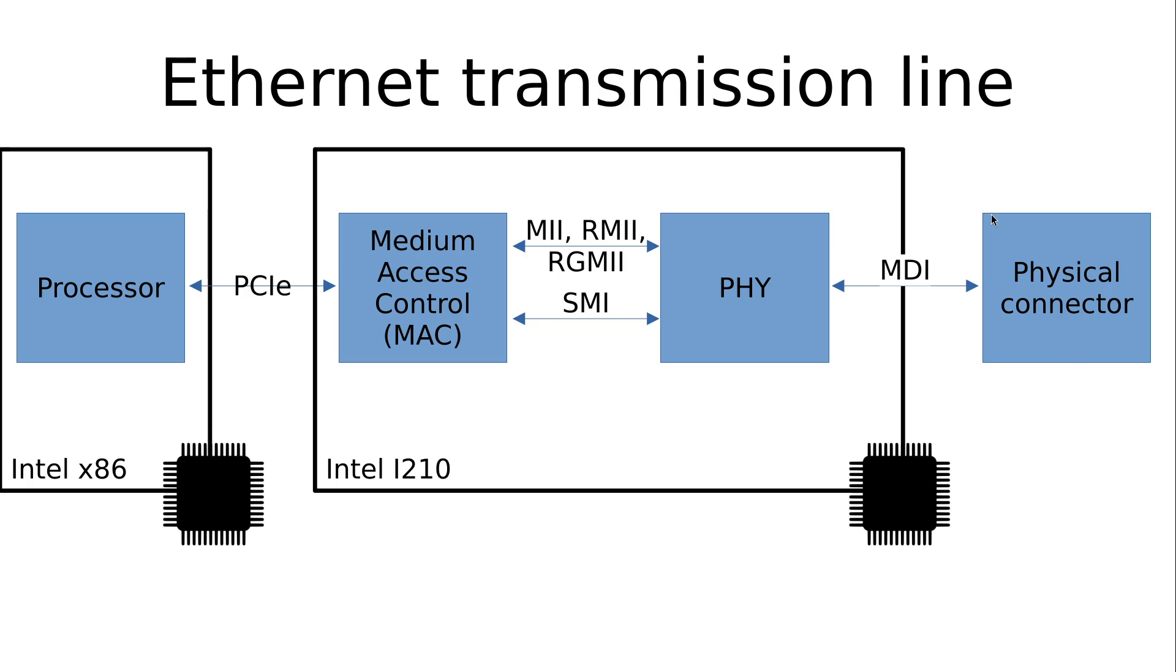And the physical connector would be also placed on the networking card. So maybe I should have drawn this box here and not ending here. But never mind. If you just take a look at this chip here, this entity would be the networking card but this entity would be the Intel i210 chip.